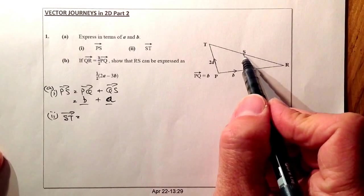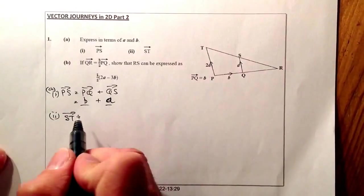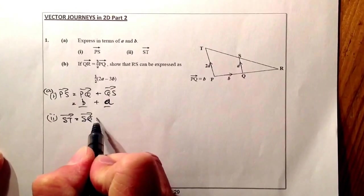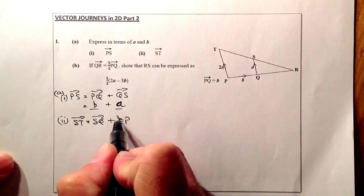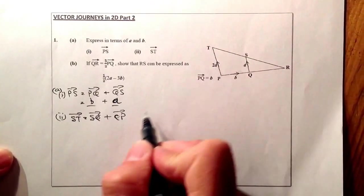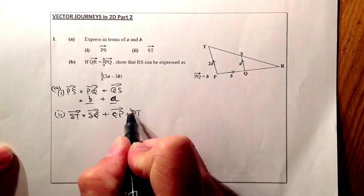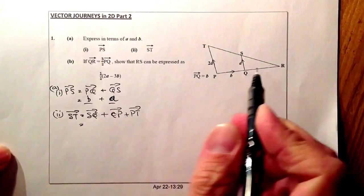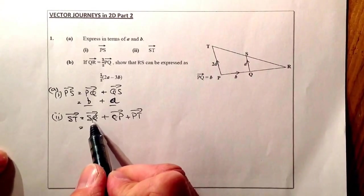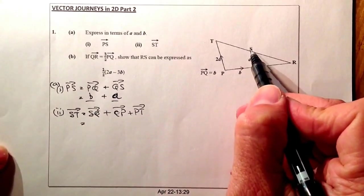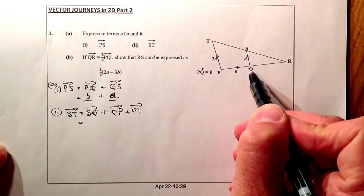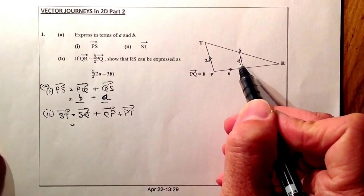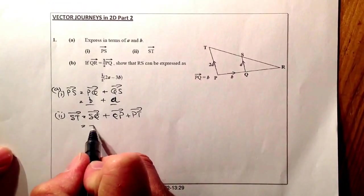Right, so from S to T, I could go for SQ. Add on to that Q to P, and then add on to that P to T. What I'll do is I'll substitute the vectors in for here, so S to Q. S to Q is going against the vector, going in the opposite direction of the vector A, so that'll be minus A.